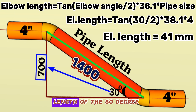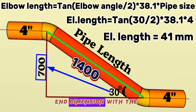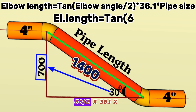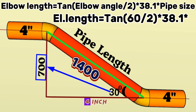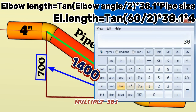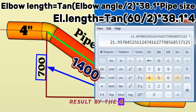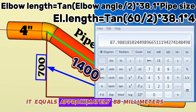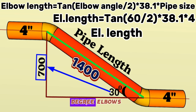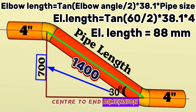Now let's calculate the center-to-end dimension of the 60-degree elbow using the same method. Elbow length = tan(60 ÷ 2) × 38.1 × 4. Using the calculator: 60° divided by 2 equals 30°, tangent of 30° multiplied by 38.1, then multiplied by 4-inch pipe size equals approximately 88 millimeters. So the 4-inch 60-degree elbow's center-to-end dimension is 88 millimeters.